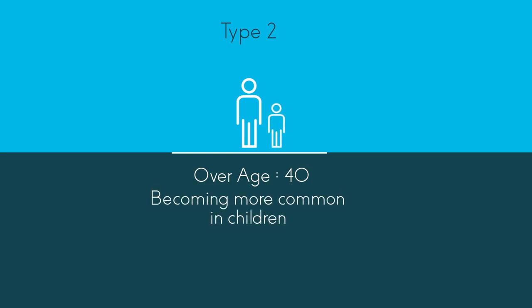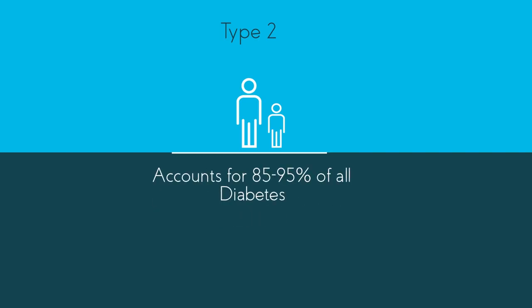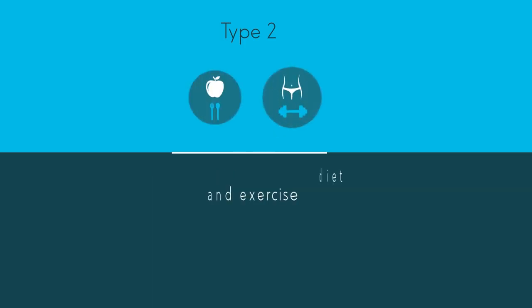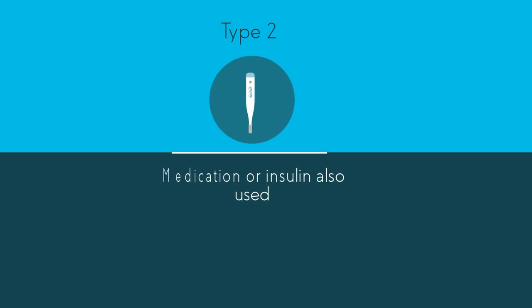Type 2 diabetes usually appears in people over the age of 40, but it is becoming more common in children and younger people. It accounts for between 85 and 95% of all diabetes, and is treated with a healthy diet and regular exercise. Medication and or insulin are also often used.